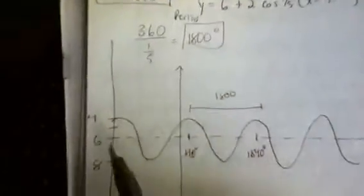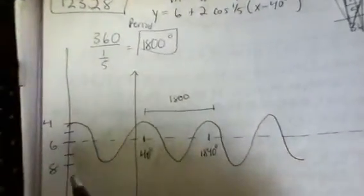Midline, amplitude, period, phase shift. The midline is 6, so I draw a dotted line at 6. The amplitude is 2, so I go up by 2 and down by 2.